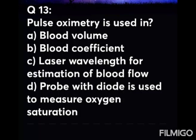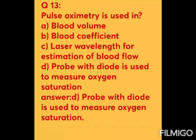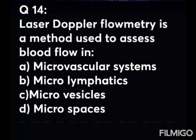Question 13: Pulse oximetry is used in — Option A: blood volume. Option B: blood coefficient. Option C: wavelength for estimation of blood flow. Option D: probe with diode is used to measure oxygen saturation. The answer is Option D. Pulse oximetry measures the oxygen saturation level during administration of anesthesia or other medication. Blood volume causes periodic changes in the amount of red and infrared light observed by the vascular bed before reaching the photodetector.